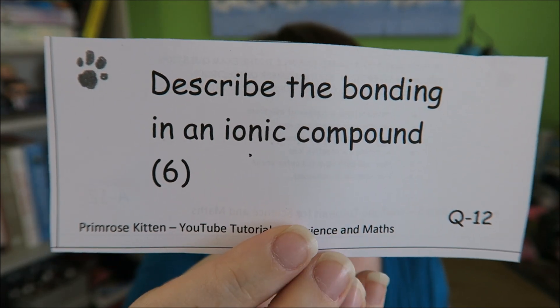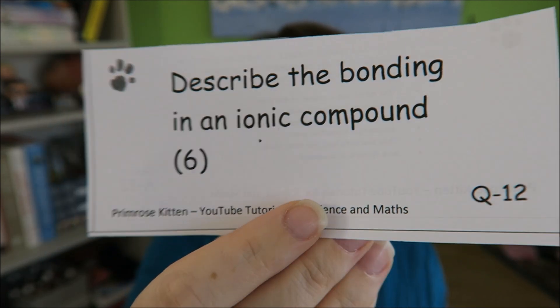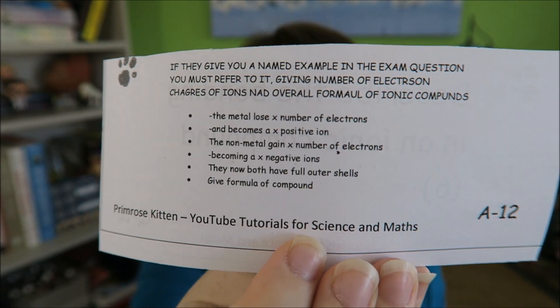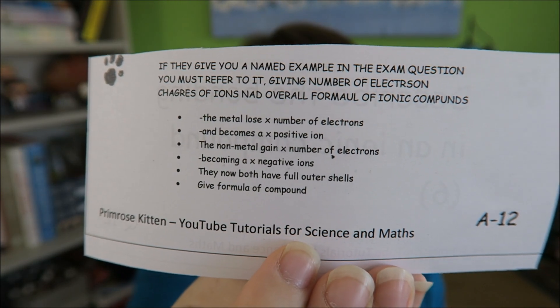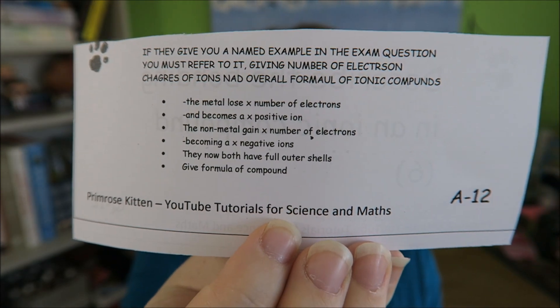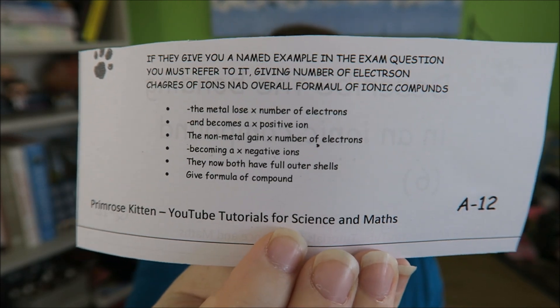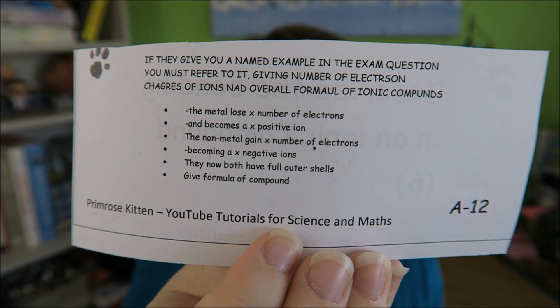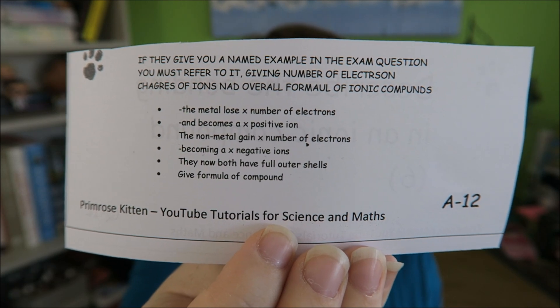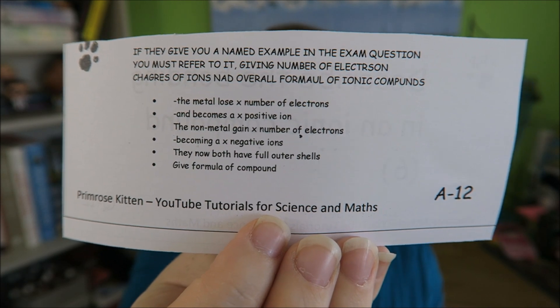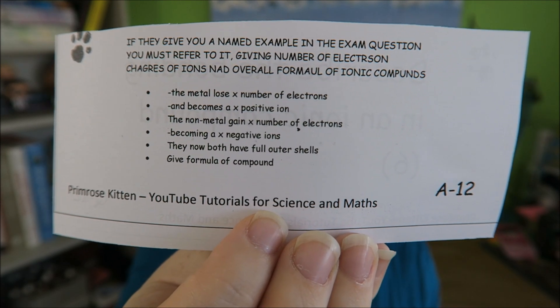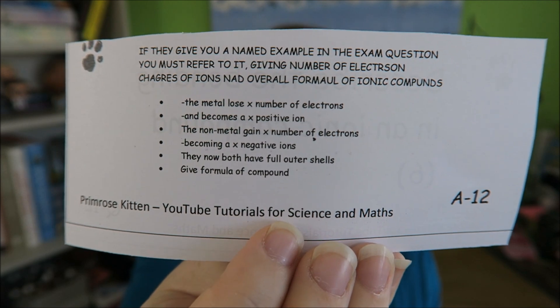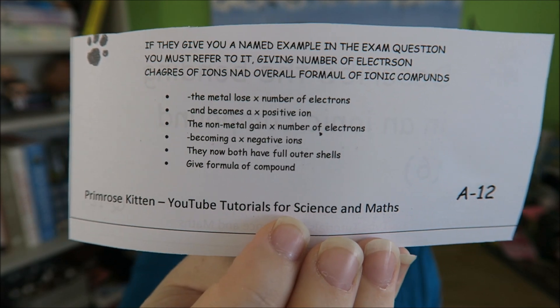Describe the bonding in an ionic compound. I've given you quite specific instructions about making it relevant to the exam question. Your metal is going to lose electrons and become a positive ion. Your non-metal is going to gain electrons and become a negative ion. They both have full outer shells, then give the formula of the compound that's going to be made.